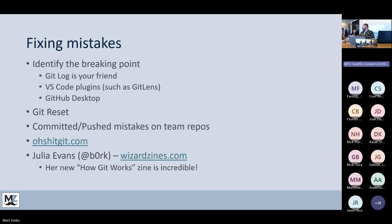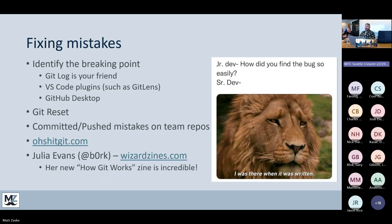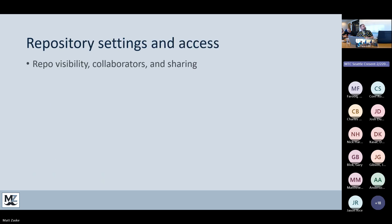Oh Shit Git (ohshitgit.com) is a useful little tool with some common fixes to common problems. And Julia Evans at wizardzines.com writes wonderful little snapshots of really functional content. She just released a new zine called 'How Git Works' — I think it's $12. It has a lot of stuff that will tell you all the commands and will also teach you what's going on under the hood.